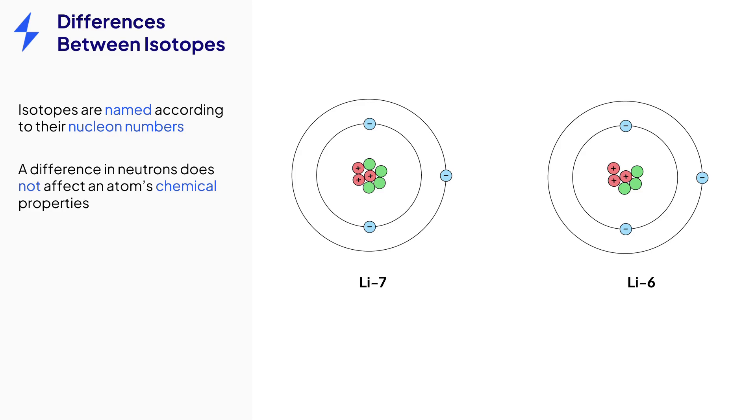You may notice that their electron structures are identical. Isotopes of an element have the exact same chemical properties, which is how they behave in reactions, because the arrangement of their charged particles is identical.